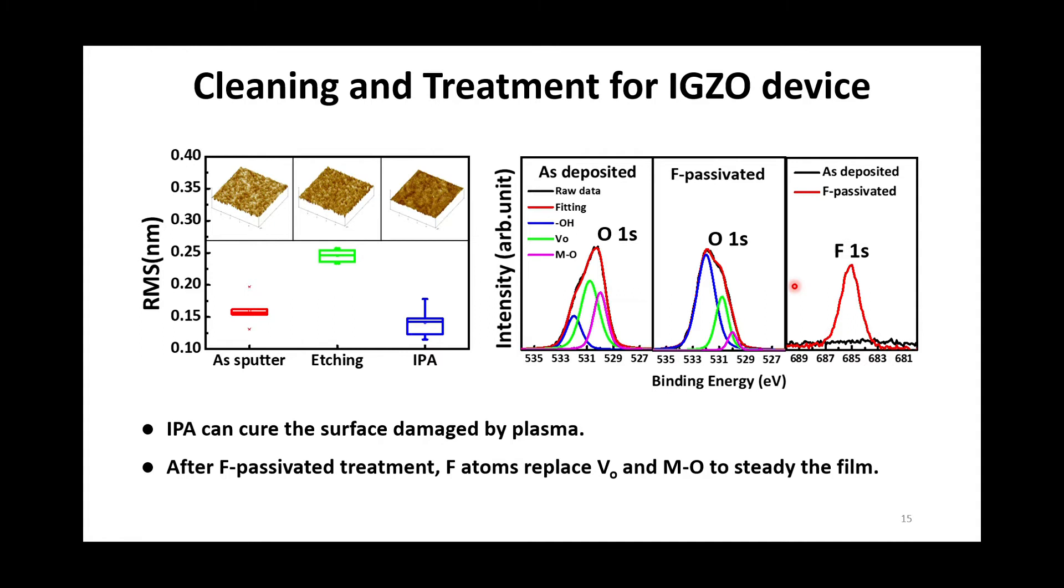To fabricate nanoscale IGZO channel, the isotropic dry etching instead of wet etching is introduced to define the active region. Therefore, the plasma-induced ionic molecule might bond the IGZO surface, leading to the rough surface. AFM analysis shows that the surface can be cured by IPA as smooth as deposition.